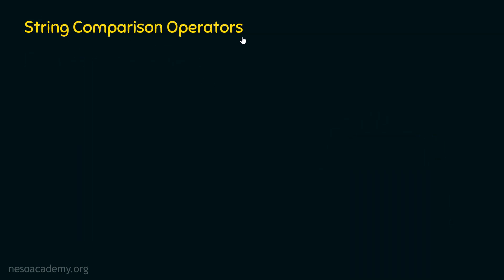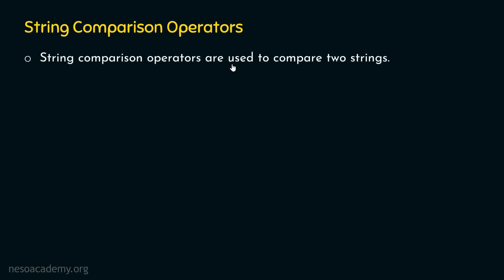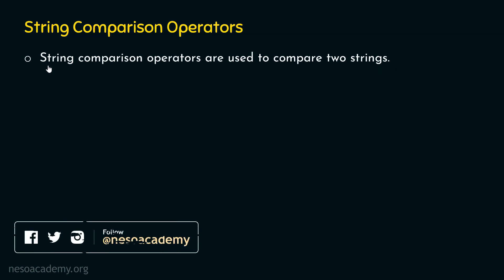What are string comparison operators in Python? String comparison operators are used to compare two strings at a time. If we have a string comparison operator, it can compare two strings at a time, because a string comparison operator is a binary operator — it needs two operands. Before discussing different types of string comparison operators, I want you to remember some points.